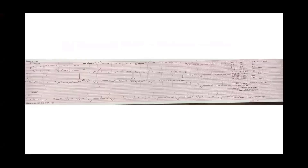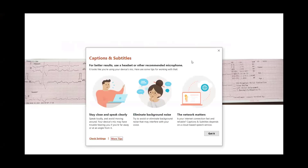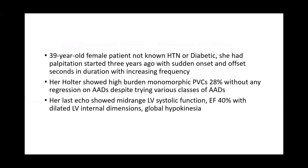Our case is a 39-year-old female patient, non-hypertensive or diabetic. She had palpitations started three years ago with sudden onset and offset, seconds in duration with increasing frequency. Her Holter showed bigeminy monomorphic PVCs at 28%, without any regression on antiarrhythmic drugs, despite trying various classes of antiarrhythmic drugs.